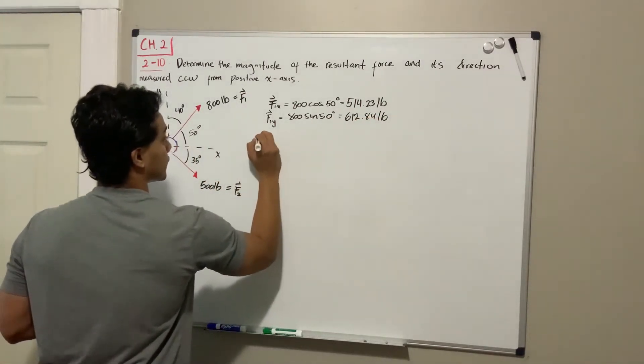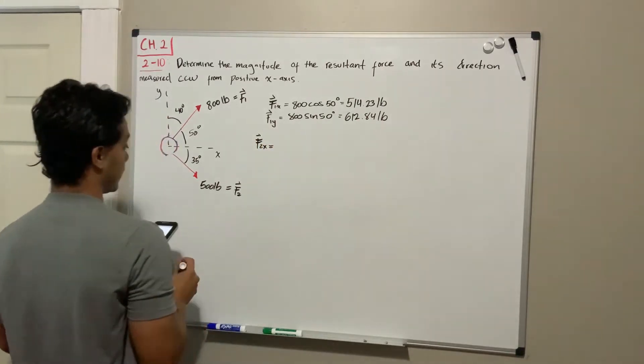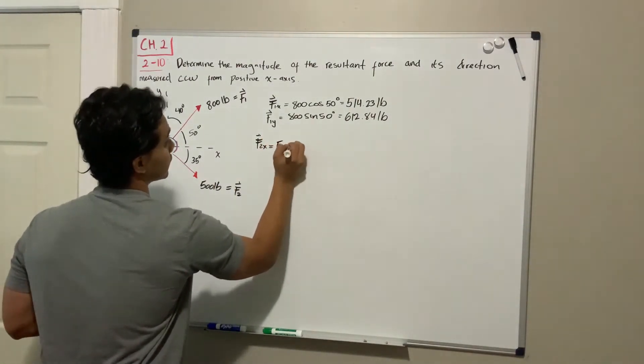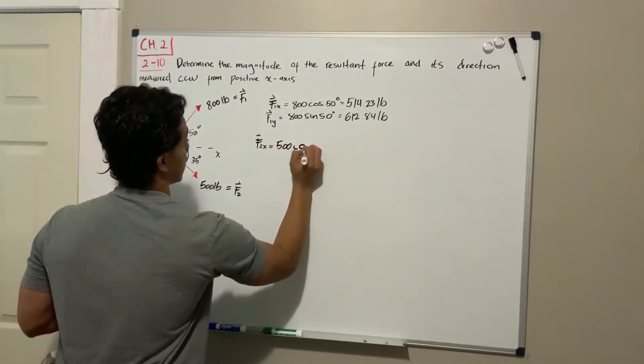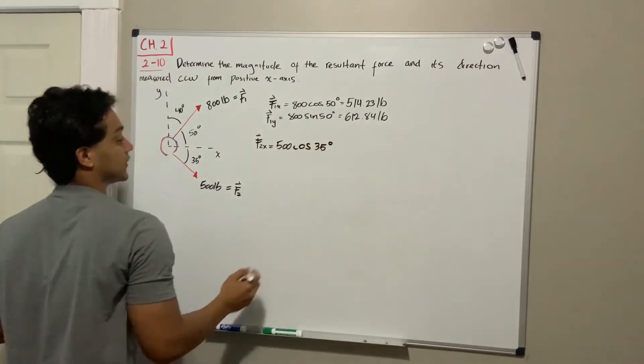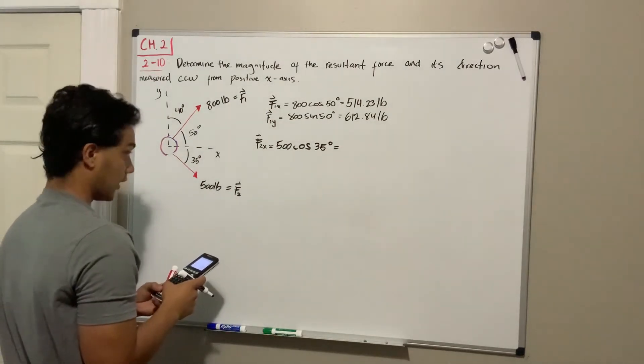Let's go to F2. F2 in the x direction, we're gonna do 500, its magnitude, multiplied by the cosine of the angle which is 35 degrees. So that's gonna be equal to 500 cosine of 35.